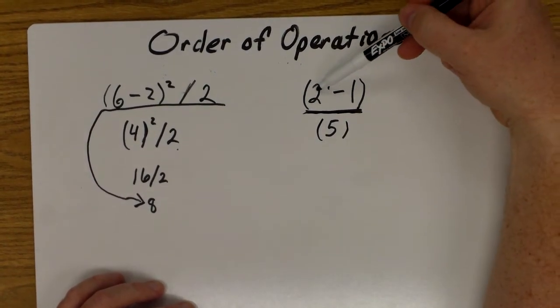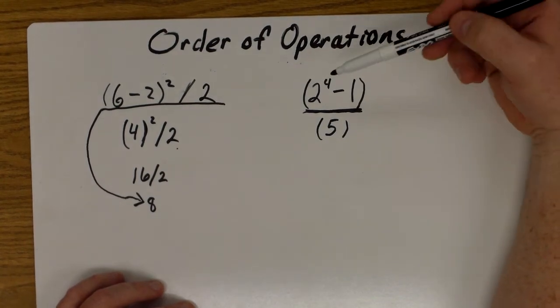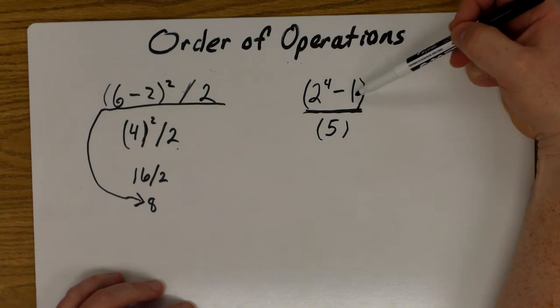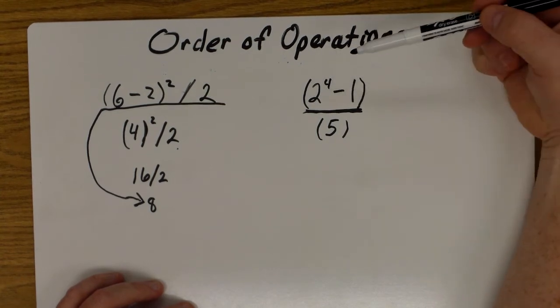Everybody knows that we do the exponent first, two to the fourth, but what a lot of people will try to do is come down and divide by five without subtracting one from this expression on the top.